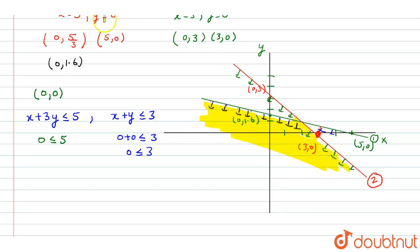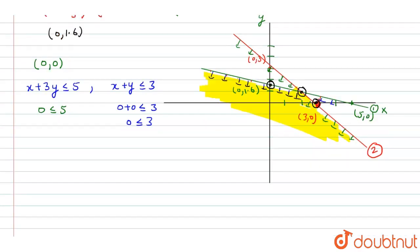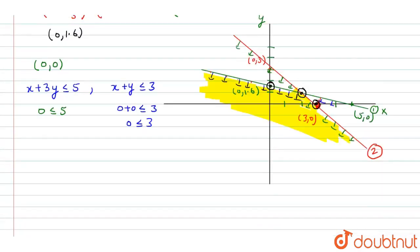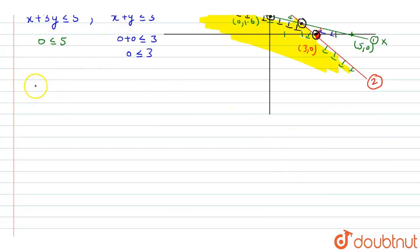Now we find the corner points — the points which touch the boundary of the shaded region. The corner points are: (0, 5/3), (3, 0), and the origin (0, 0). We also need to find the point of intersection of the two lines.